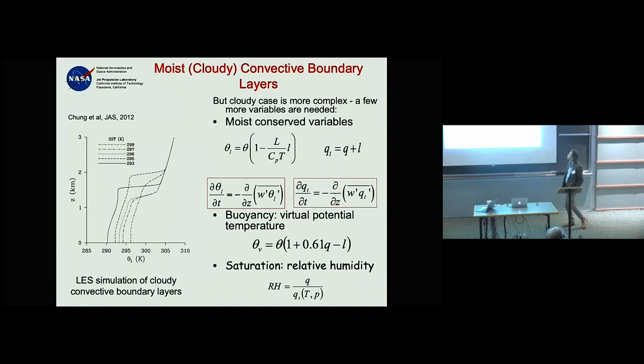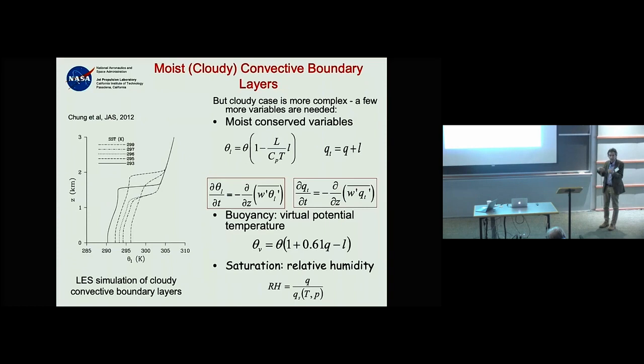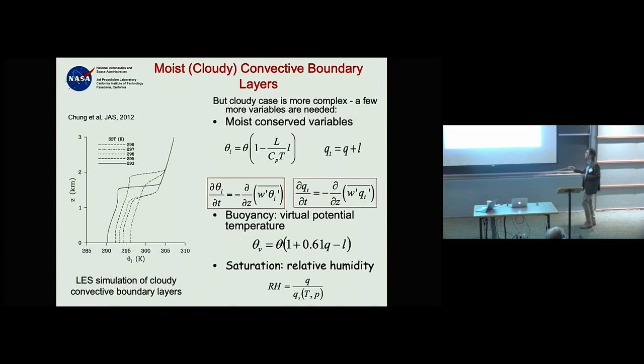You need two additional variables. Your dry boundary layer is not dry anymore — water vapor and liquid water play a role. You need virtual potential temperature to estimate buoyancy, and you also need a variable telling you how far you are from saturation: relative humidity.